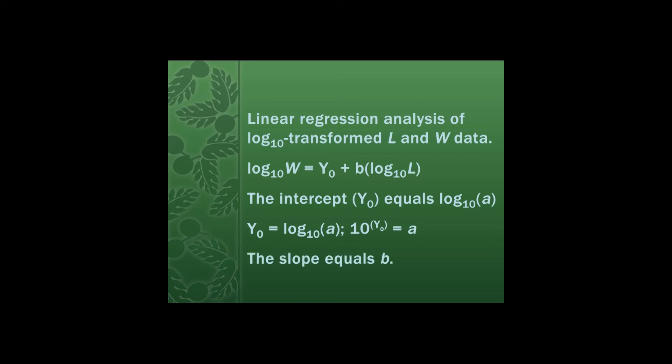Finding the value for b is a little bit more straightforward. It turns out that b — the slope of the line that we got from linear regression analysis — is equal to that exponent b we're looking for in the length-weight relationship.